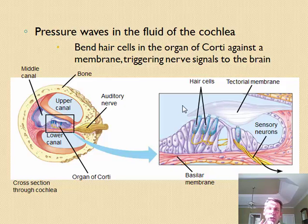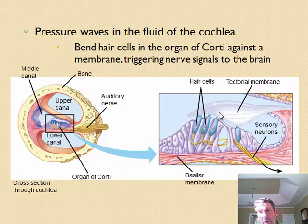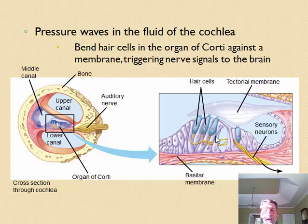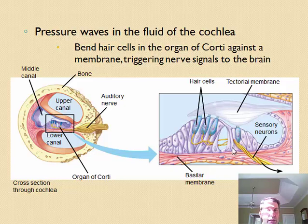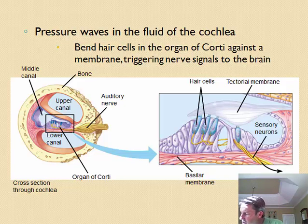When that sound wave comes through the chain of bones, it rattles the outer part of the cochlea and moves the fluid inside. That fluid moving is going to move the hairs that are attached to nerve endings. As those hairs move, they pick up the sound wave, and that mechanical energy — the energy of movement — is directed to the brain to process that information.